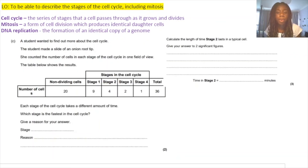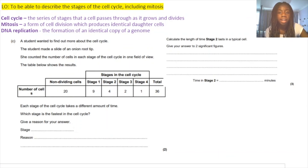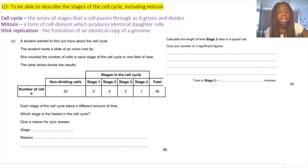Here is our first worked example. A student wanted to find out more about the cell cycle, so they made a slide of an onion root tip and counted the number of cells in each stage of the cell cycle in one field of view. The question asks: which stage is the fastest in the cell cycle? Give a reason for your answer.